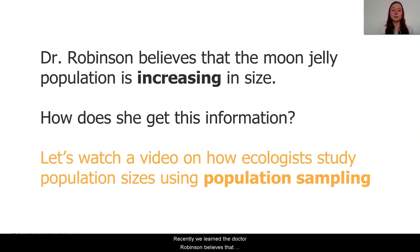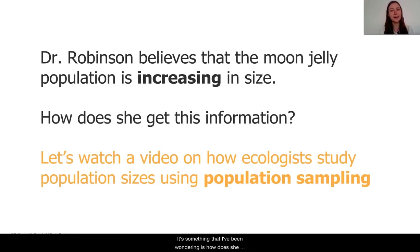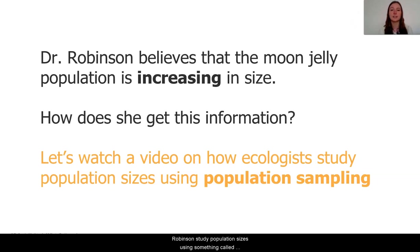Recently we learned that Dr. Robinson believes that there is an increase in the moon jelly populations that she studies. But something that I've been wondering is how does she get this information? Let's watch a video on how ecologists like Dr. Robinson study population sizes using something called population sampling. Enjoy!